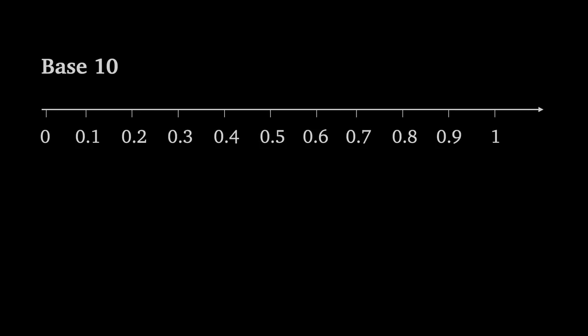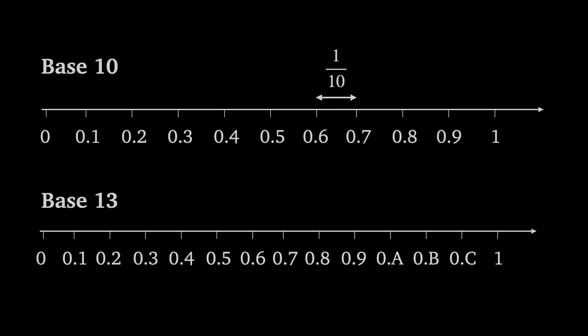For decimals, the case is slightly different. In base 10, the numbers ranging from 0 to 1 in steps of 0.1 differ by 1 tenth. But in base 13, they differ by 1 thirteenth.